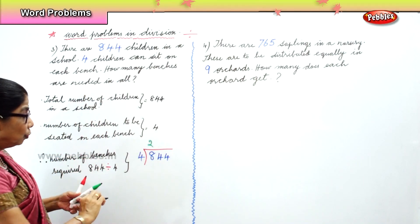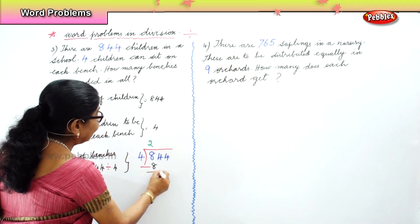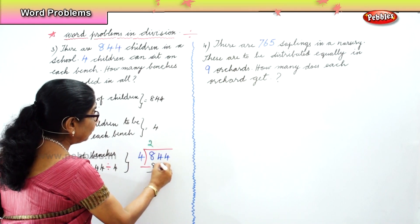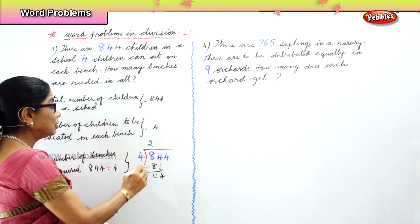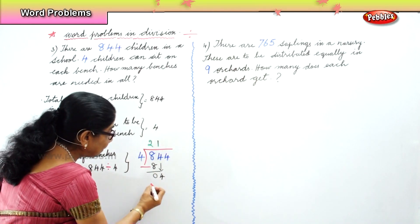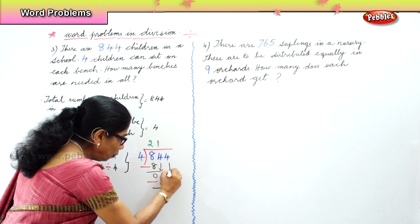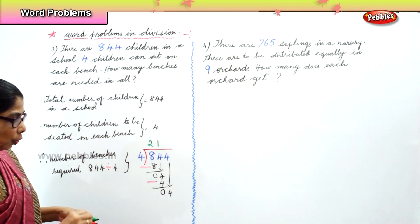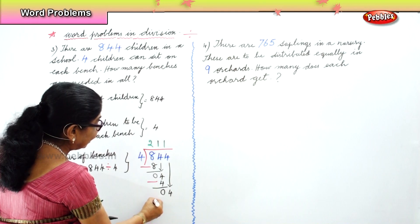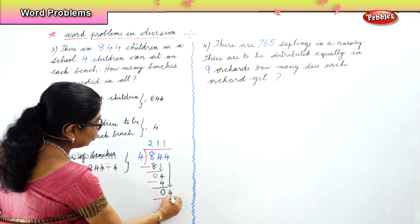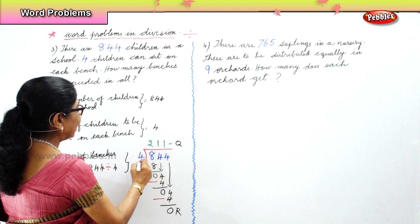Four twos are eight, so minus eight. Eight take away eight is zero. Next, we bring the first four down. Four goes into four one time — four is four, so we put minus four. Four take away four is zero. We have one more four to bring down. Again, four goes into four one time — put the one on top, then minus four. Four take away four is zero. Your remainder is zero.